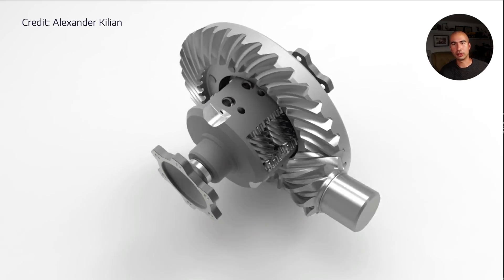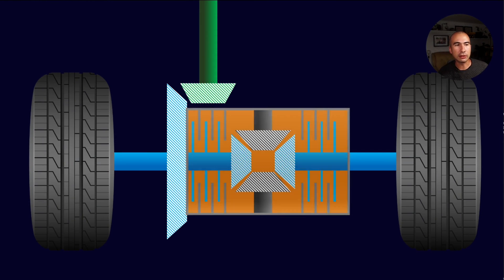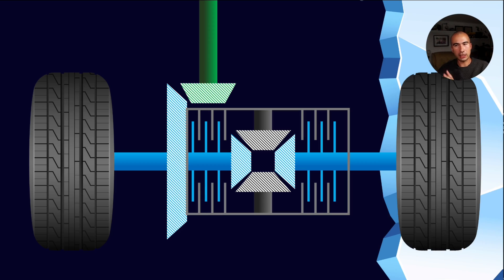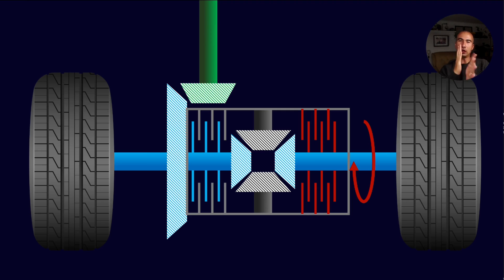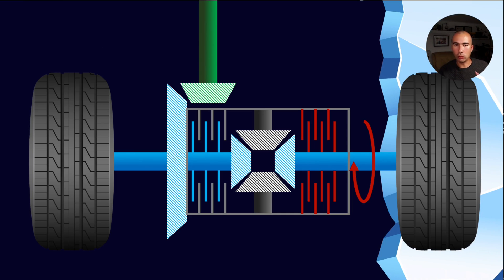Another example of a limited slip diff is the viscous LSD, which operates on a completely different principle entirely. You have fluid contained within the limited slip diff, and rather than clutch plates, what you're relying on is the fluid friction between two plates. When the wheel encounters ice and spins really quickly, the fluid shears rapidly between the plates, and you want a fluid whose viscosity increases greatly to resist that flow and start transferring torque. In this instance we typically see silicon-based fluids — not mineral or standard synthetics — with really high viscosity indexes.